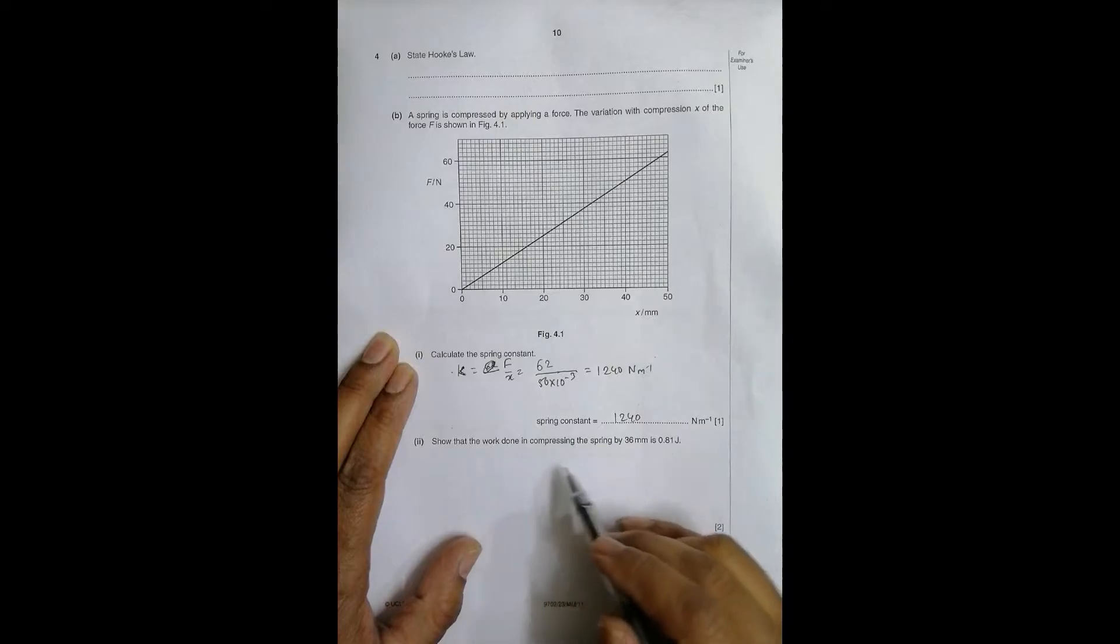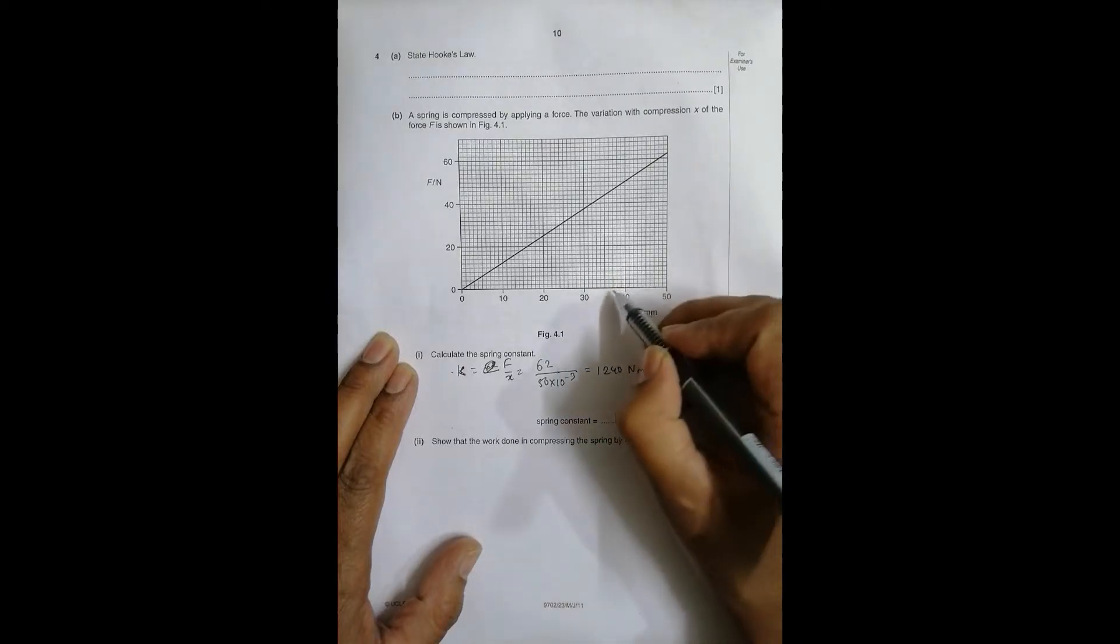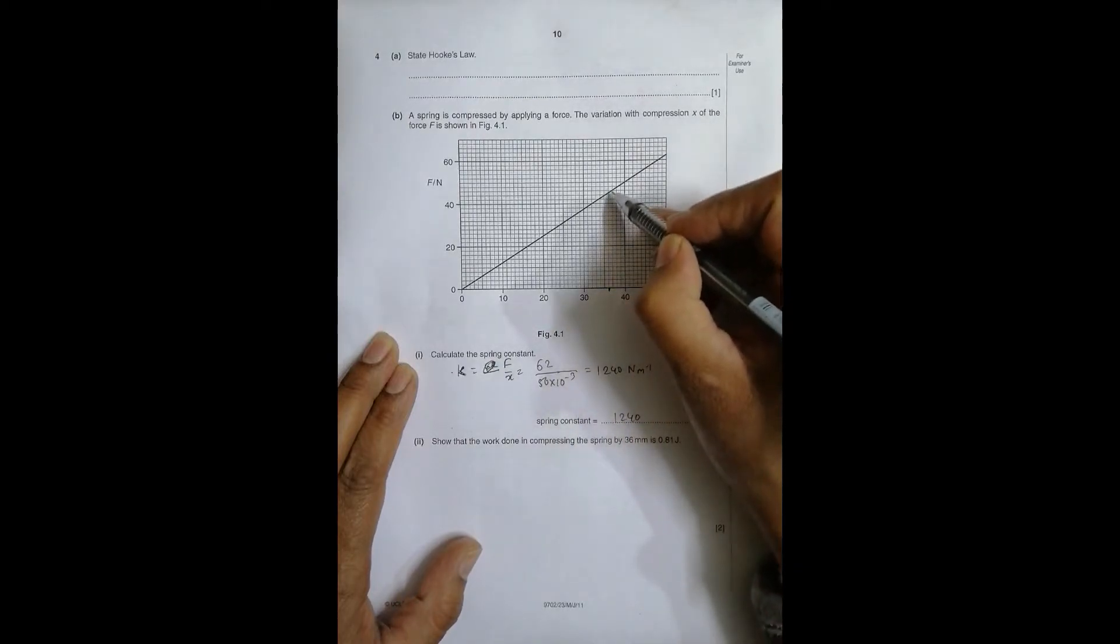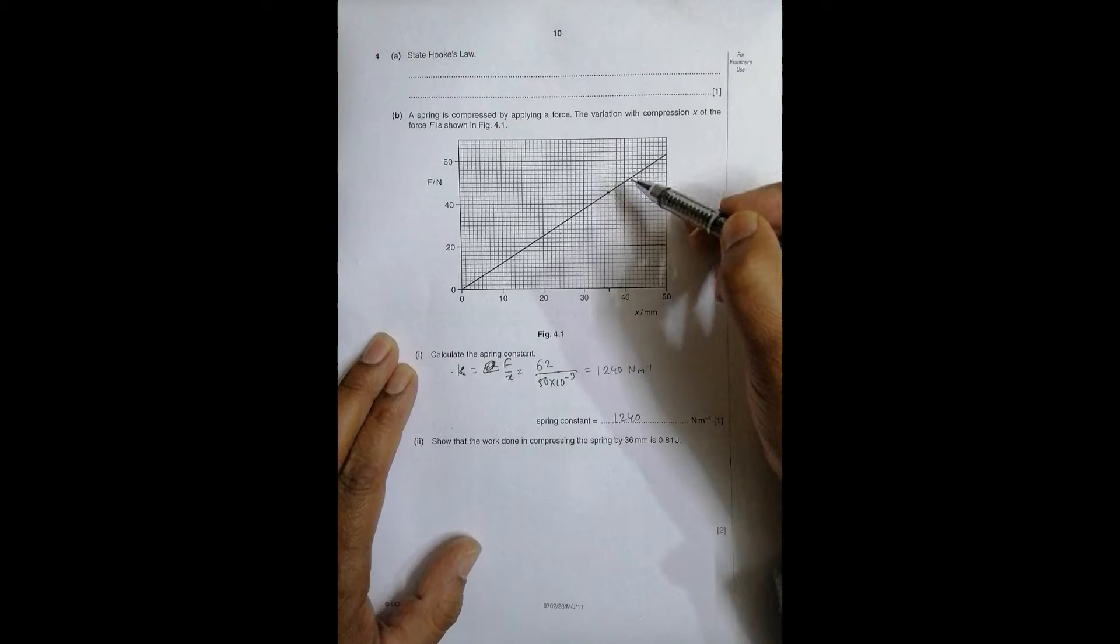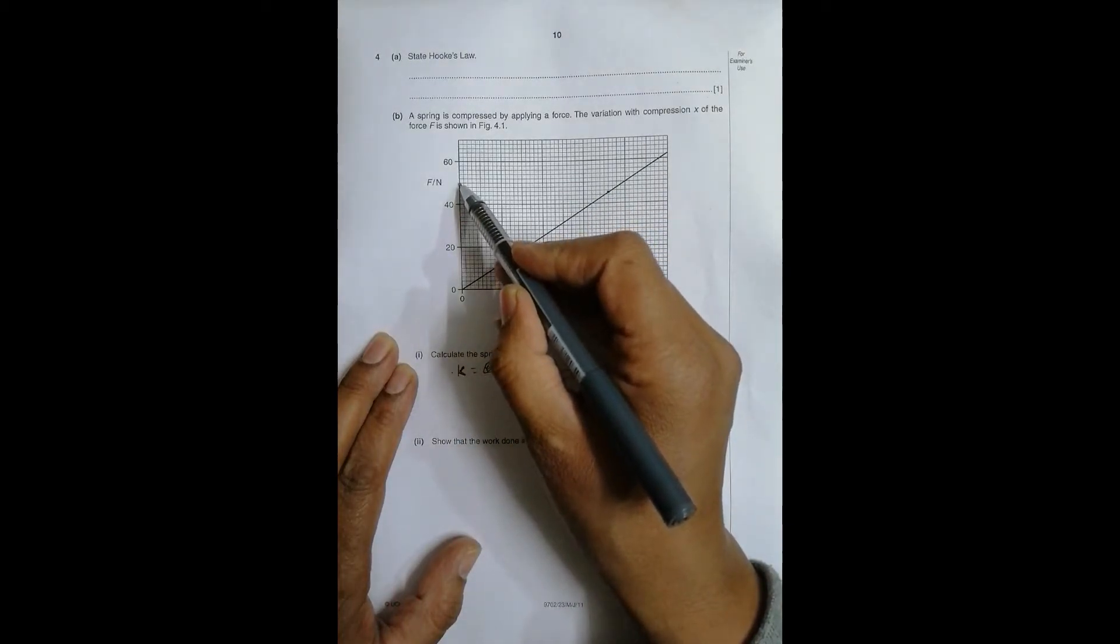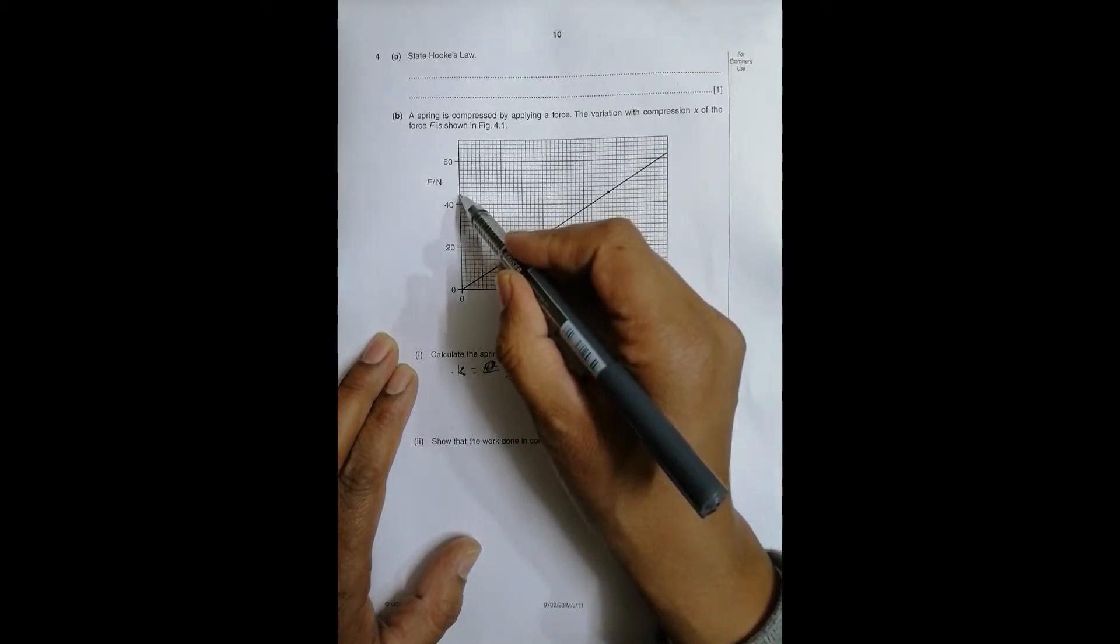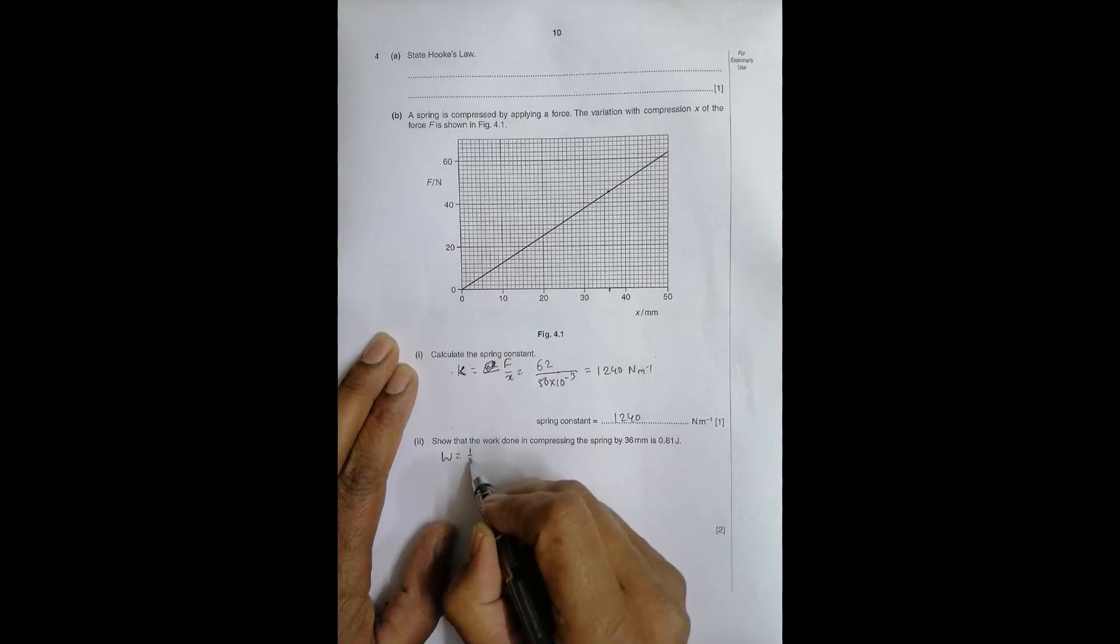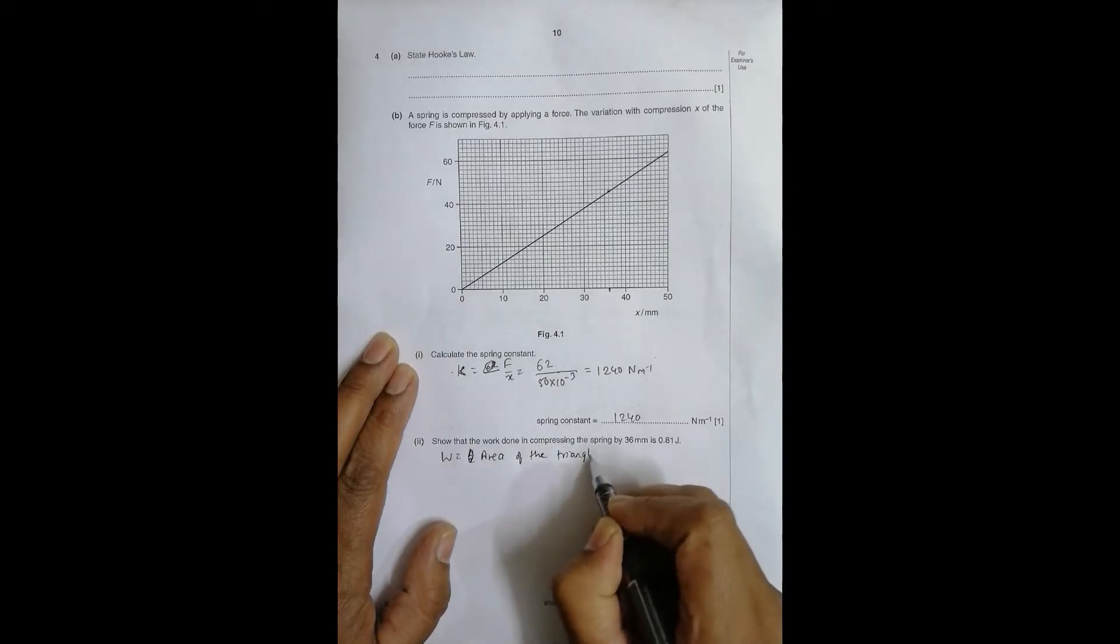Now number two: show that the work done in compressing the spring by 36 millimeter is 0.81 joule. At 36, the value of force is this much. This is 40, this is 50, this will be 42, 44 and this thing is in the middle so it should be 45. We have work done is equal to the area of the triangle formed.